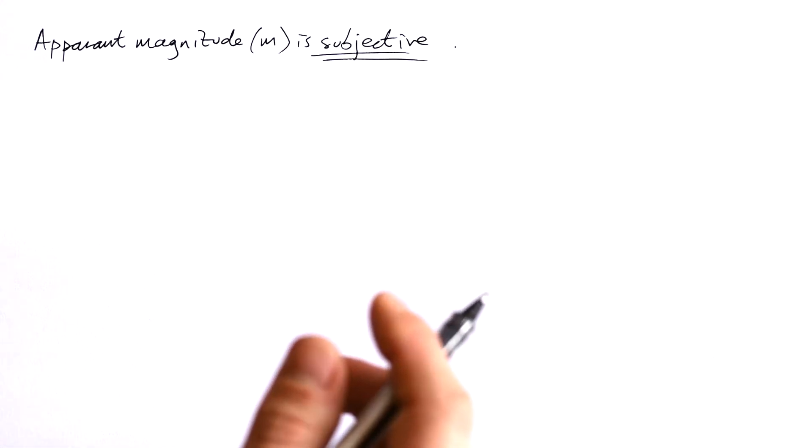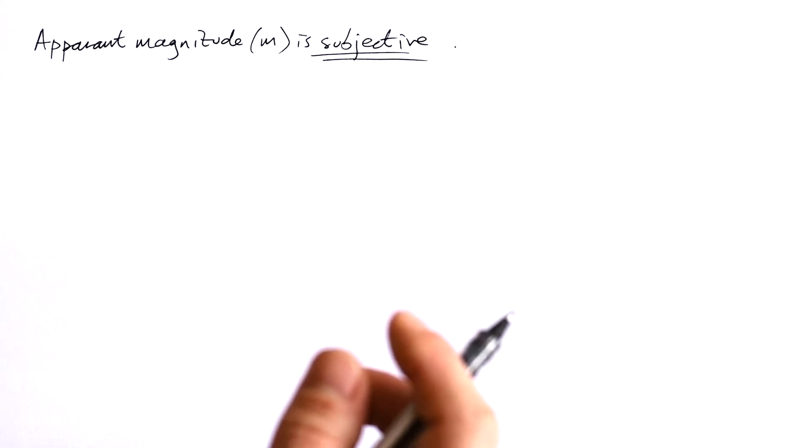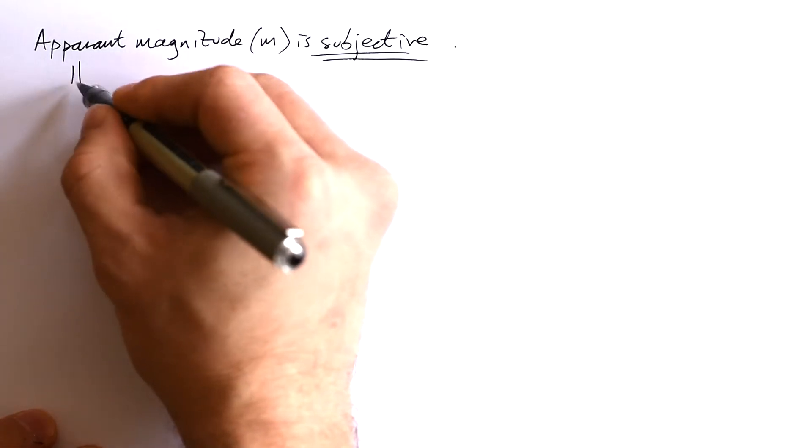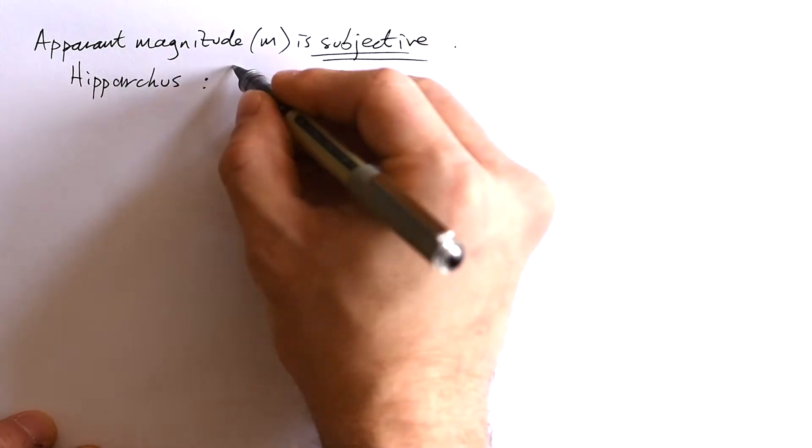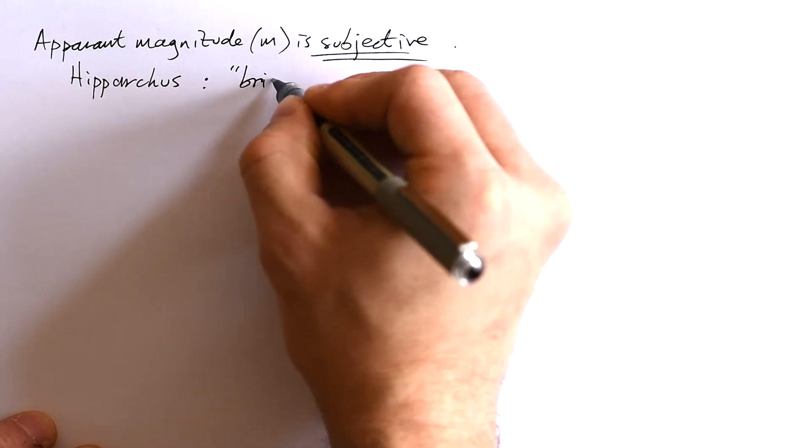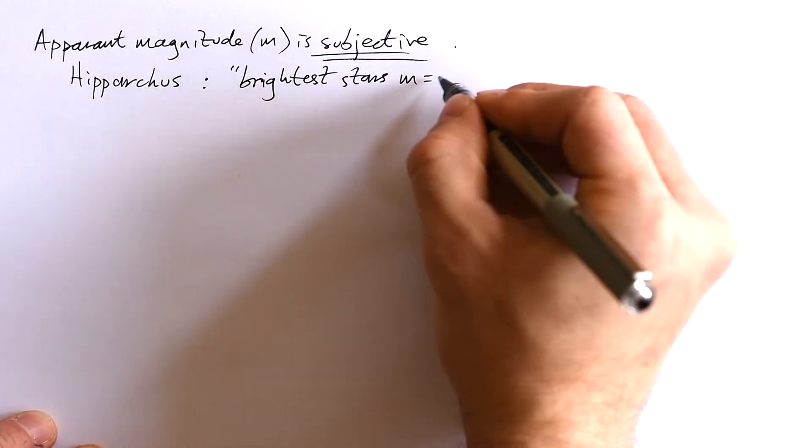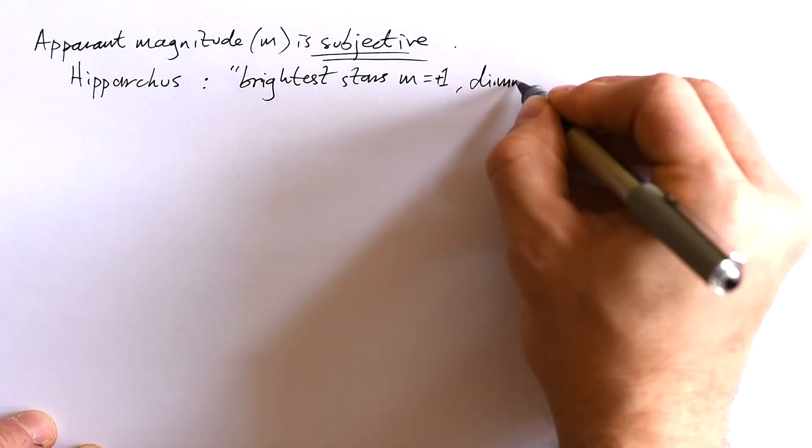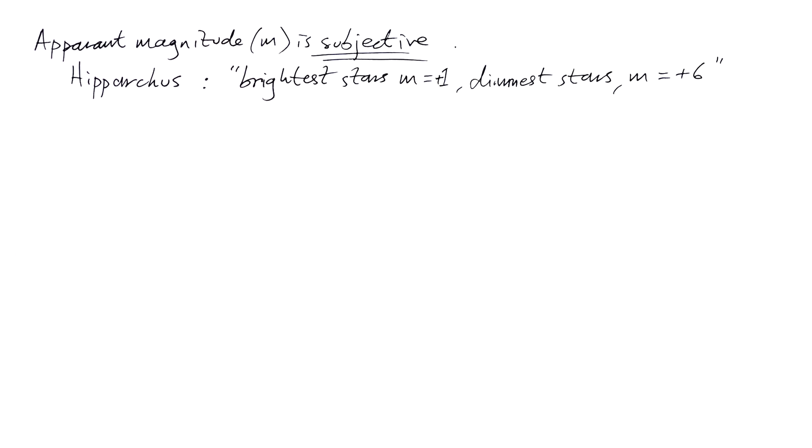The problem with the apparent magnitude scale for stars is that it is subjective. It was devised by a Greek called Hipparchus, who said the brightest stars have an apparent magnitude of plus one, and the dimmest stars visible to the naked eye are plus six.